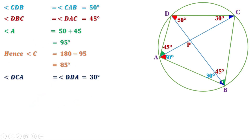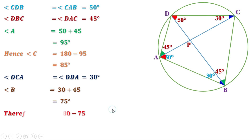Now, angle B equals 30 plus 45, which is 75 degrees. The opposite angles are supplementary, therefore angle D equals 180 minus angle B, or 180 minus 75 degrees, and that is 105 degrees. So we got all four angles of this quadrilateral. Now let us find the angle between the diagonals.